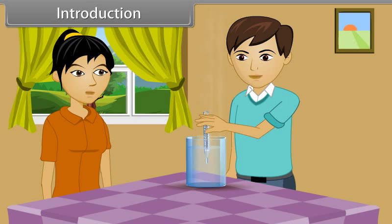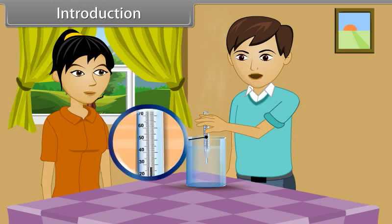Brother, how does this thermometer work? Listen, the thermometer has mercury in it. When we put the thermometer into hot water, the heat from the water causes the expansion of the mercury. When mercury stops at a point, that point indicates the temperature of the water.